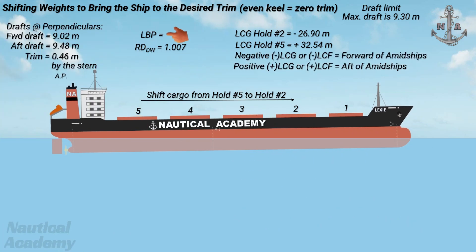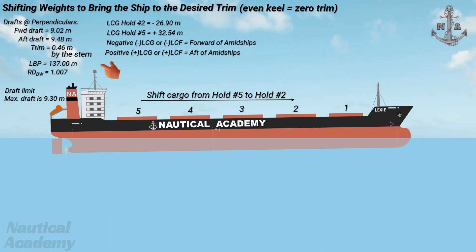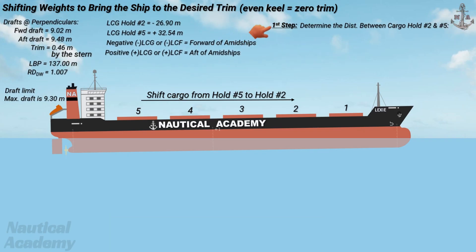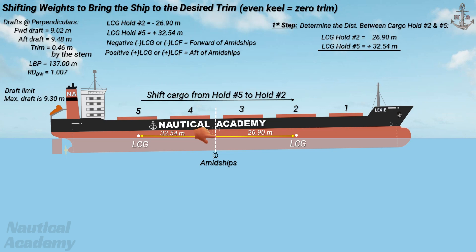The ship's length between perpendiculars, or LBP, can be found in the general particulars section of the stability booklet. In this case, the LBP is 137 meters. Once we have gathered all the necessary data, our first step is to determine the distance between cargo hold number two and cargo hold number five. The LCG of cargo hold number two is 26.90 meters forward of amidships, and cargo hold number five is 32.54 meters aft of amidships. Simply add their respective LCG values, disregarding the negative sign, giving a distance of 59.44 meters.